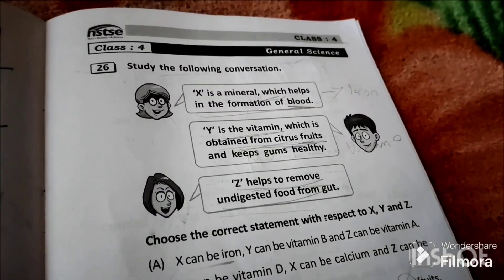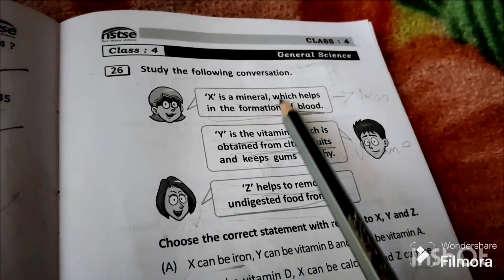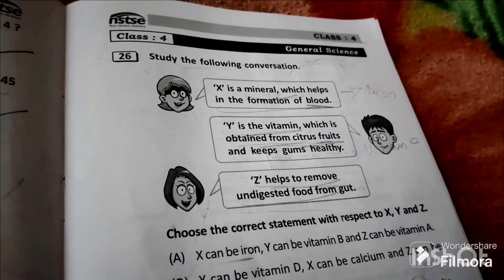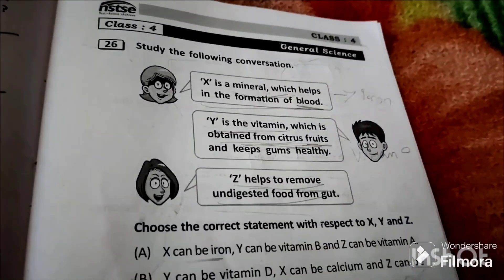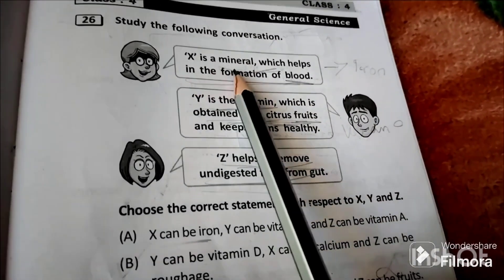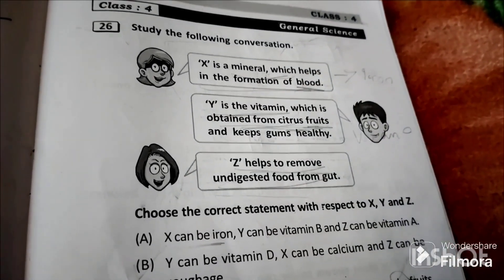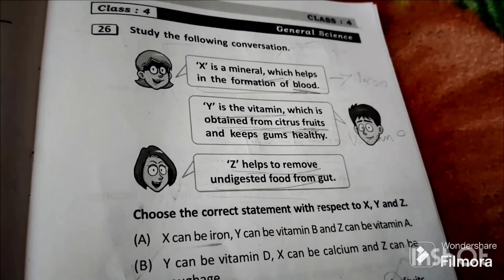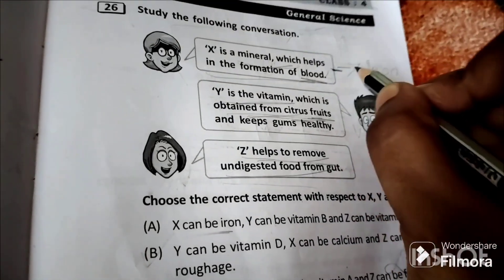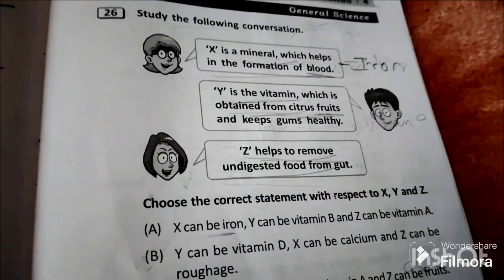NSTSE class 4 question paper code UN487 2022 general science question number 26. Study the following conversation. X is a mineral which helps in the formation of blood, so iron helps in the formation of blood. Y is the vitamin which is obtained from citrus fruits and keeps gums healthy, so that must be vitamin C.